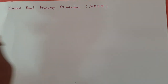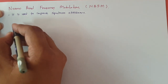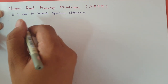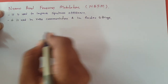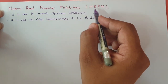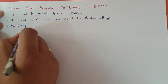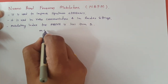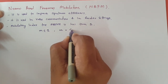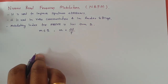Let me mention all those basics one by one. First, it is used to improve spectrum efficiency. There are many applications of narrow band frequency modulation, like voice communication as well as in radio settings. In the category of frequency modulation, the narrow band frequency modulation modulating index will be less than or equal to 1 for NBFM. The modulating index is the deviation in frequency divided by modulating frequency.